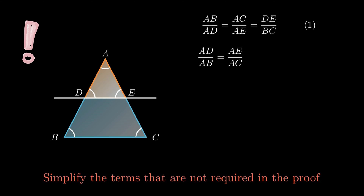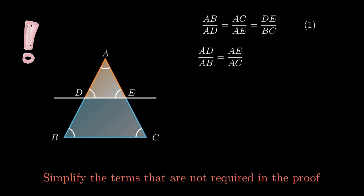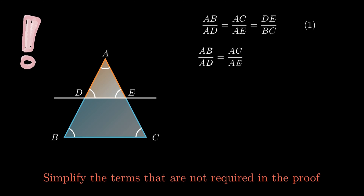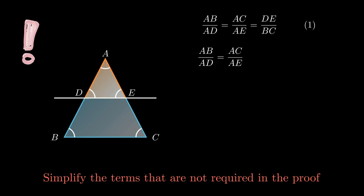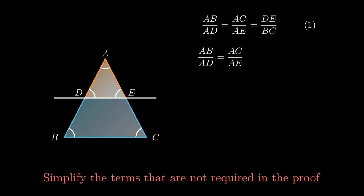In order to do so, just take reciprocal on both sides. Therefore ratio of side AB and AD equals ratio of side AC and AE. Now this equation will be simplified as discussed.